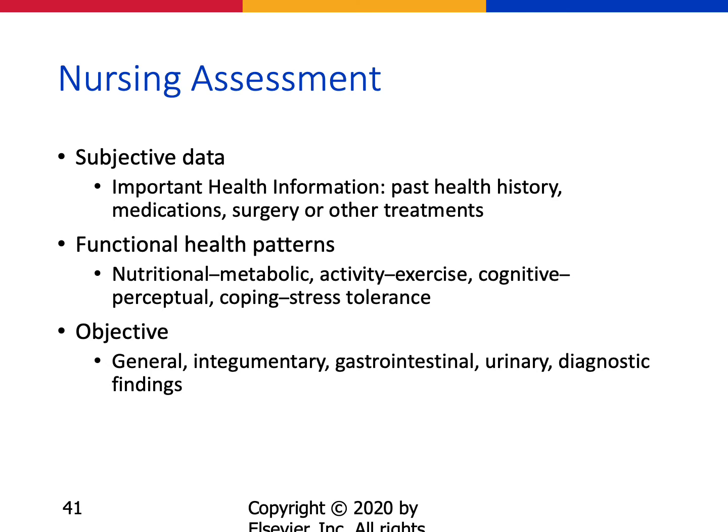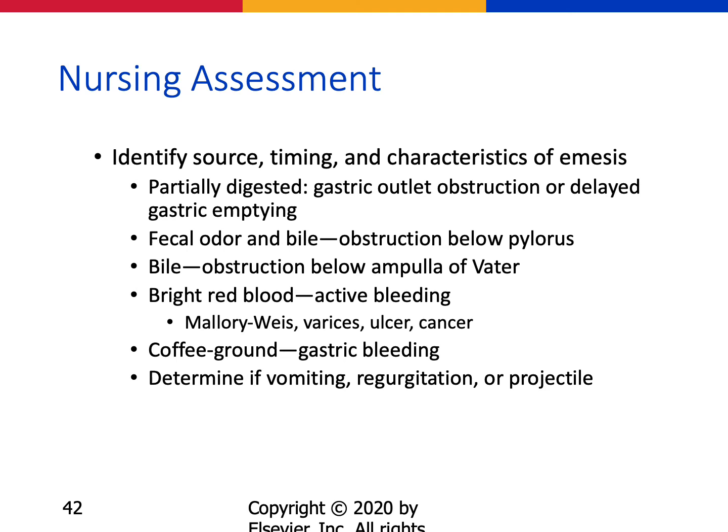When a patient has nausea and vomiting, do a thorough history and assessment to capture all data points pointing to a cause. If there is emesis, measure, define, and document it so the physician knows what's going on. Partially digested food could indicate gastric outlet obstruction; fecal odor and bile could indicate obstruction below the pylorus; bright red blood indicates active bleeding; coffee ground emesis indicates gastric bleeding. Determine whether vomiting is regurgitation or projectile.